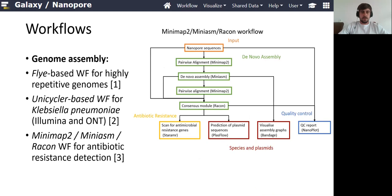We have three different workflows for genome assembly. The first one is a Flye-based workflow for highly repetitive genomes. We have a Unicycler-based workflow where you can input, besides long-read sequences, also short-read sequences. In this way you can use the advantages of both sequencing techniques.